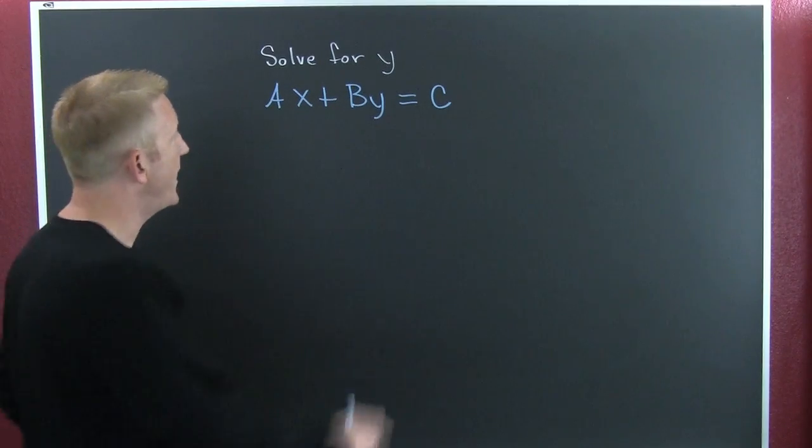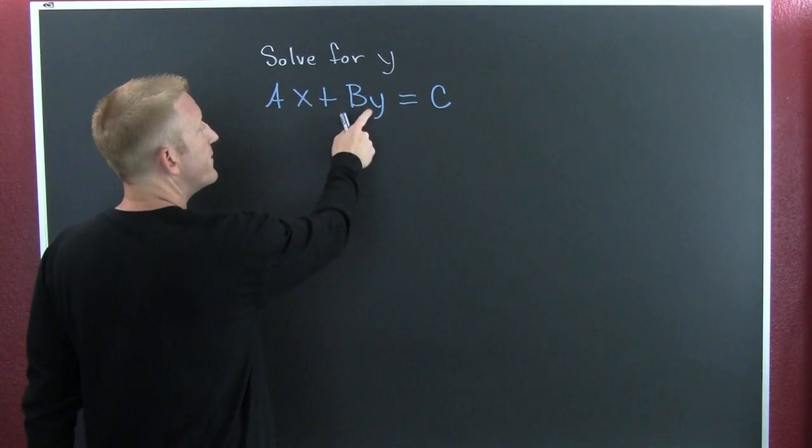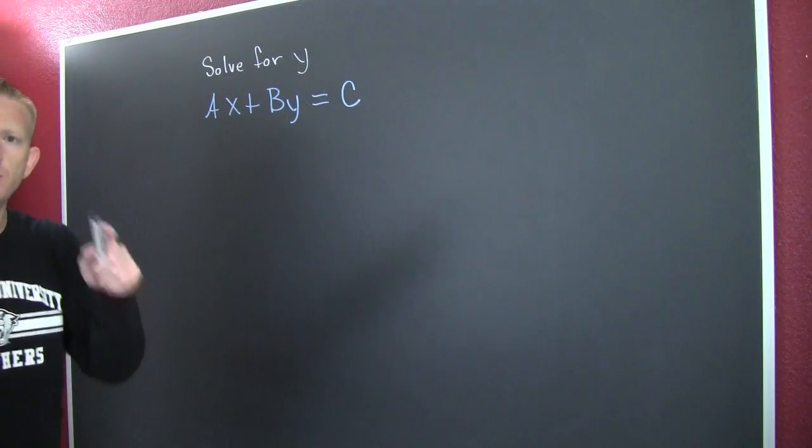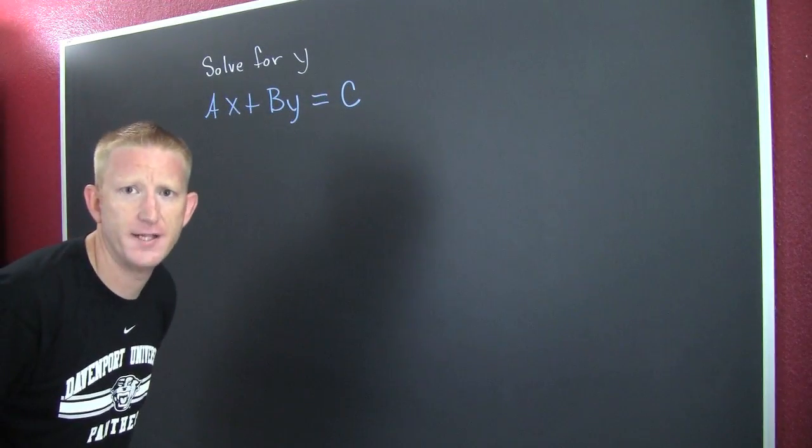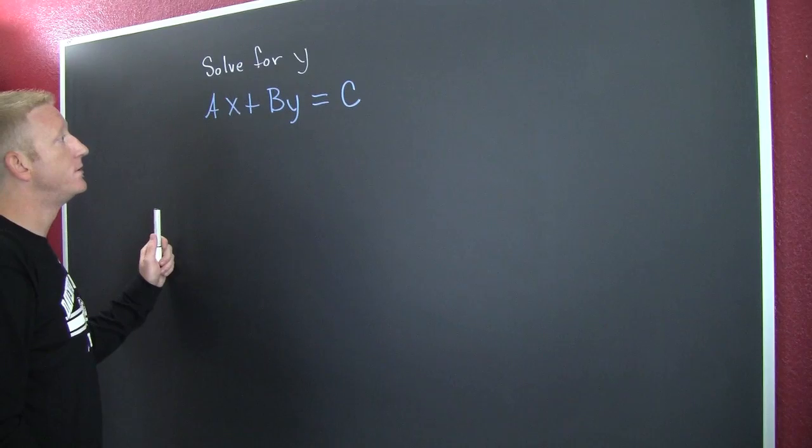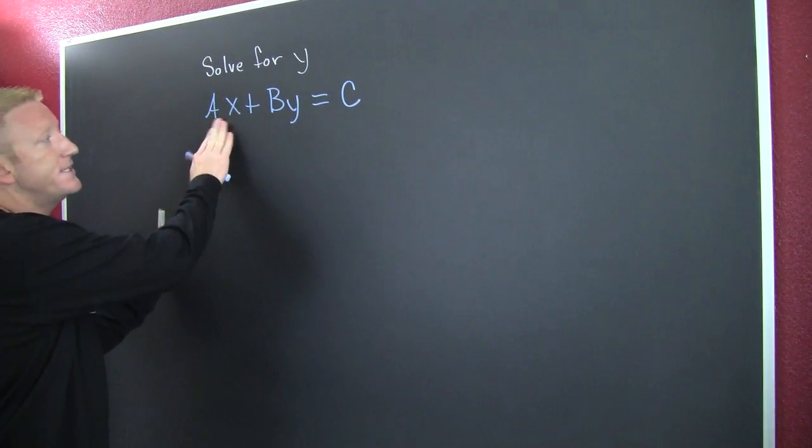But first we have to get rid of the friends before we get rid of the more than friends. What am I talking about? Friends - I'm talking about you undo the addition before you undo the multiplication. Here we go.